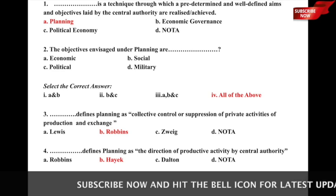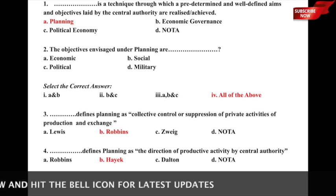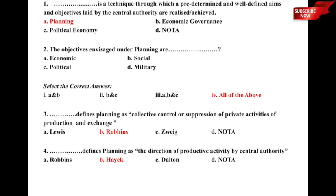The first question is: dash is a technique through which predetermined and well-defined aims and objectives laid down by the central authority are achieved or realized — whether it is a) planning, b) economic governance, c) political economy, or d) none of the above. The correct answer is a) planning. Planning is a technique through which predetermined and well-defined aims and objectives laid down by the central authority are achieved.